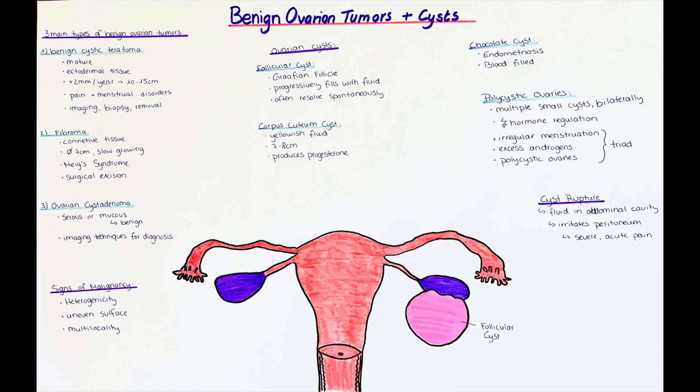Signs of malignancy include heterogeneity — for example if the tumor has both cystic and solid parts — or if the tumor has an uneven surface, or if there appear to be multiple lesions in one ovary. Sometimes it is not possible for the surgeon to remove the tumor without damaging the ovaries. In cases of multiple cysts in one ovary, an oophorectomy — the removal of one ovary — may have to be considered.